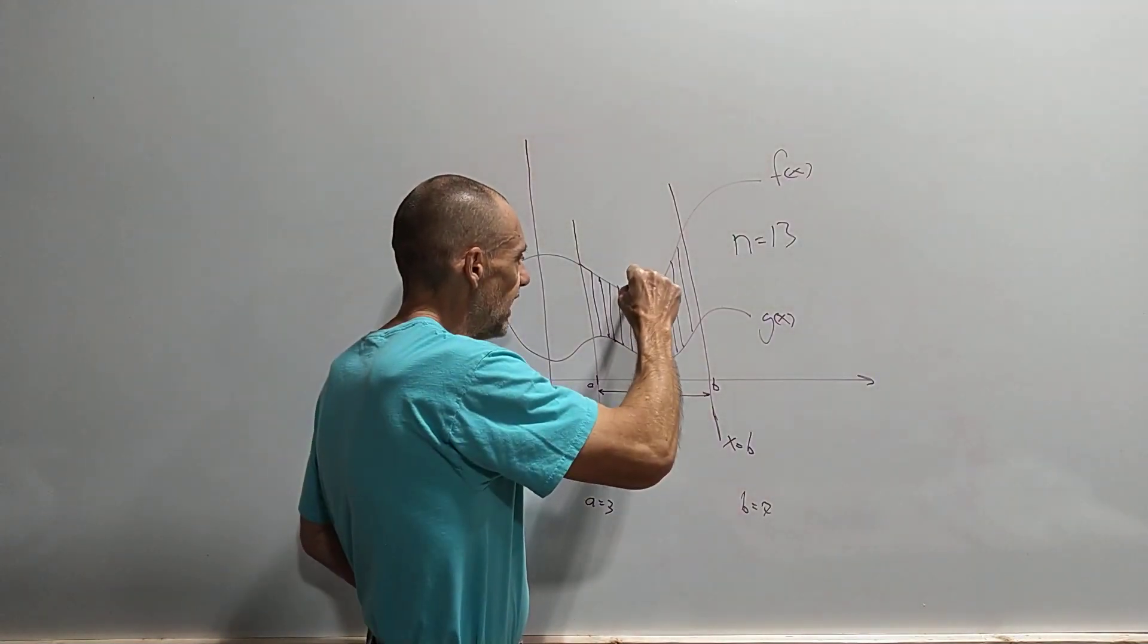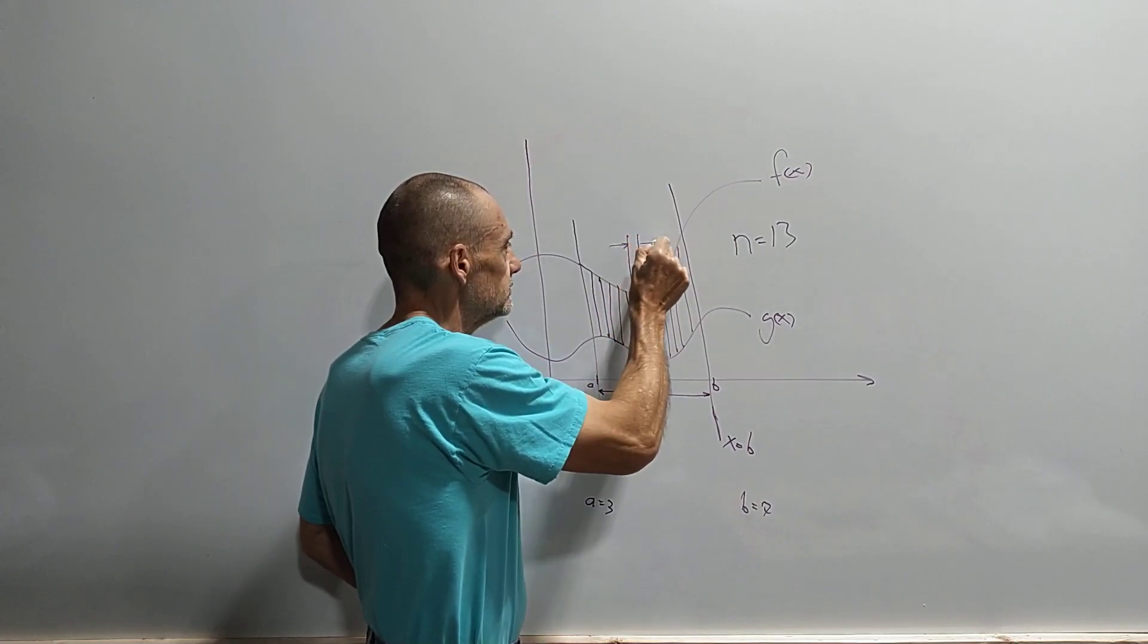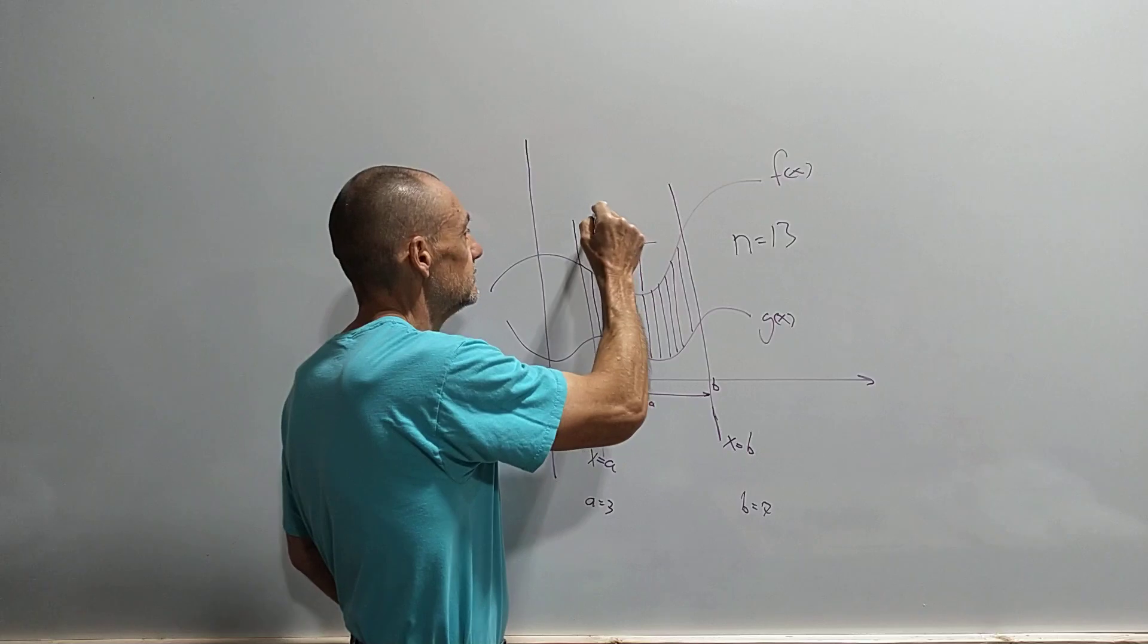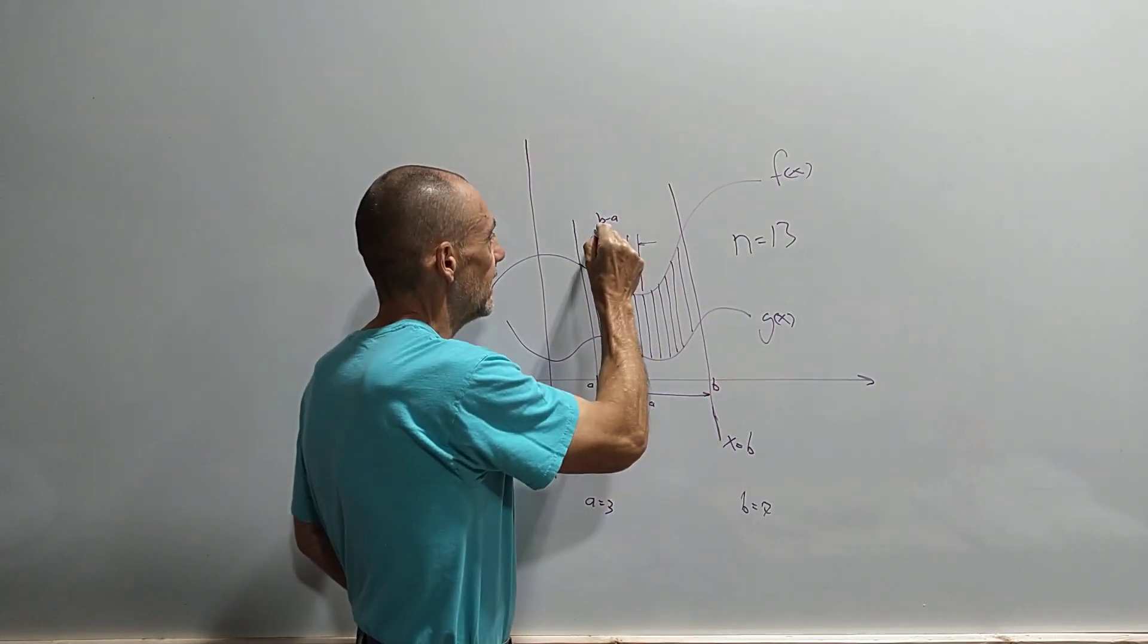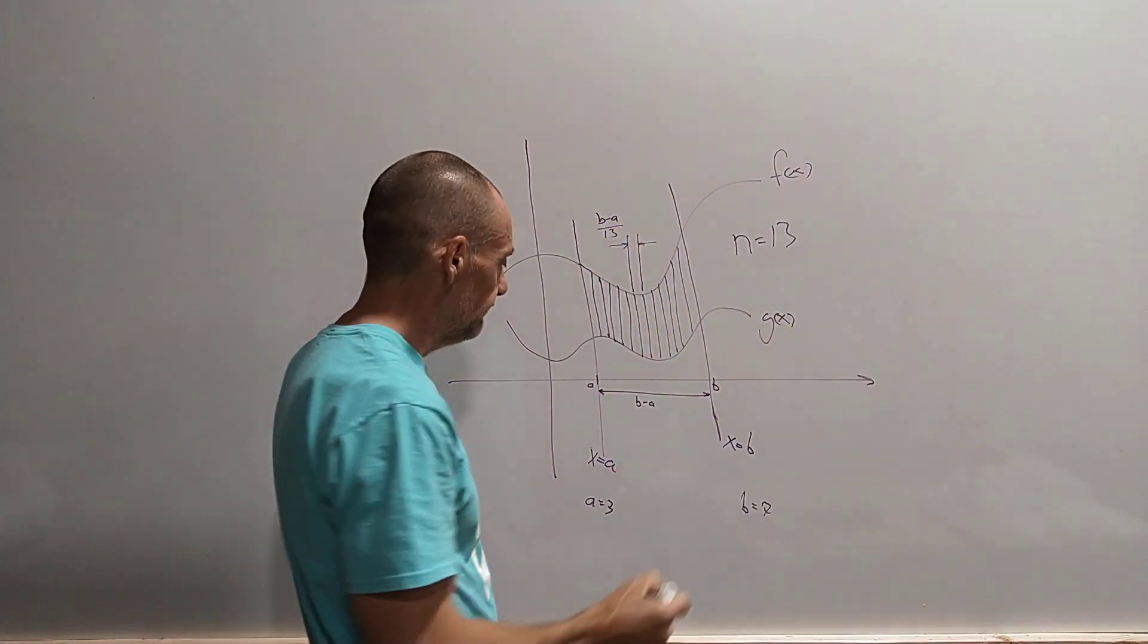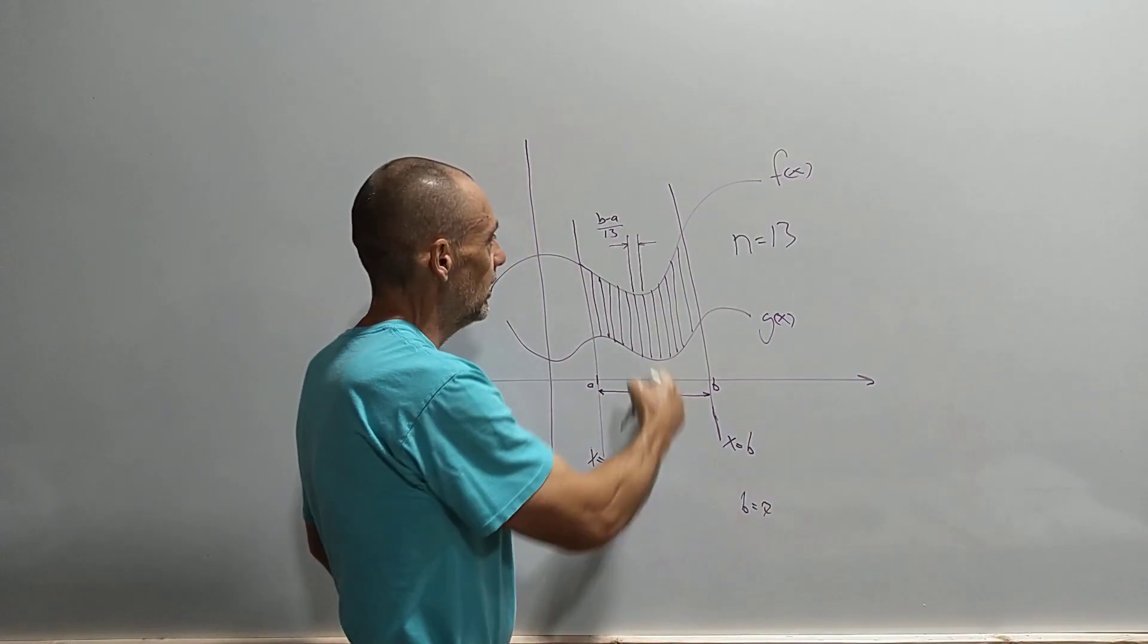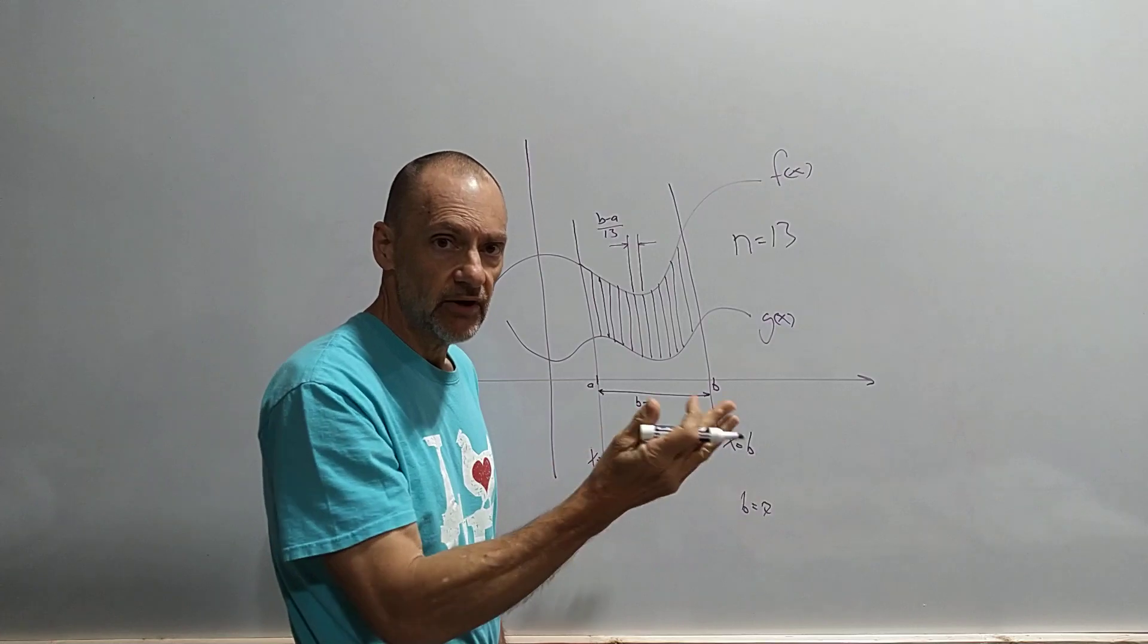So the question now is how wide is each rectangle? Well, if the whole thing is b minus a, and there are 13 of them in there, then it's got to be b minus a over 13, right? So if this distance, if b is 7 and a is 3, then this distance is 4, then this would be 4 over 13, 4/13ths each one.